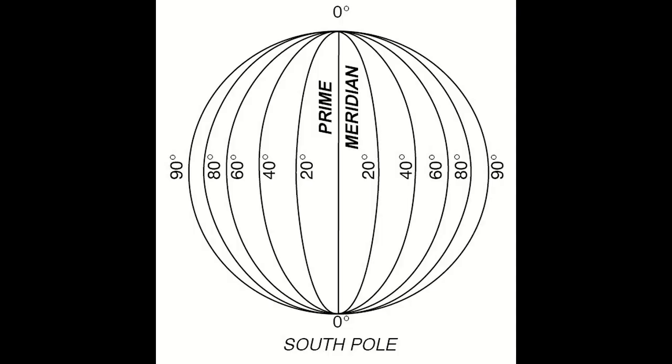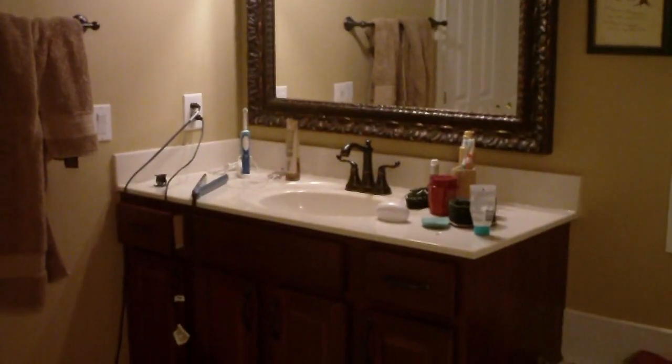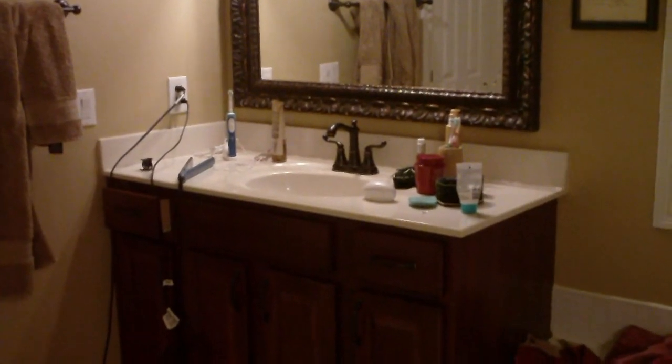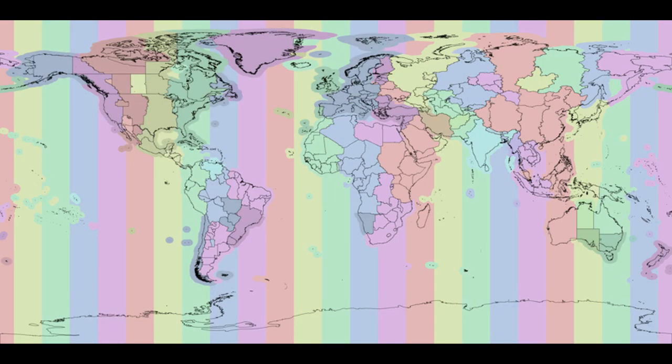Technically, this does mean that every single individual point of longitude has its own unique time. So, for example, that sink would have a time a few milliseconds ahead of that shower. This would, however, make traveling very annoying and complicated. What we do instead is divide the Earth into 24 approximately equal areas — representing the 24 hours of the day — called time zones. Each of these time zones has its own hour, so in one time zone it could be 6:27, but the next one due east would be 7:27.